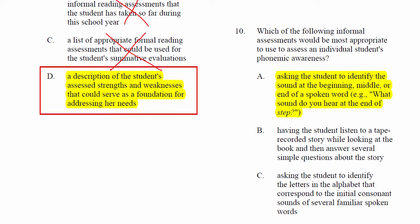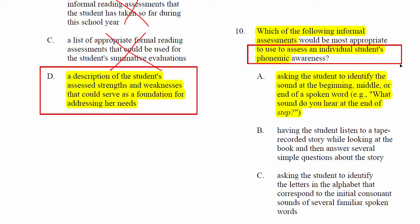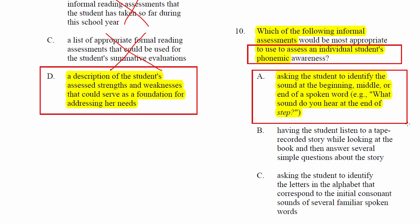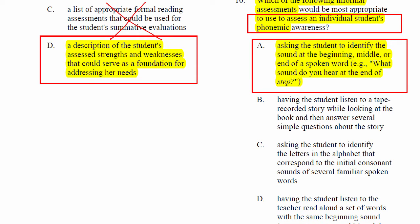Item 10: 'Which of the following informal assessments would be most appropriate to use to assess an individual student's phonemic awareness?' Since you see phonemic awareness, remember you're not dealing with any print — avoid any answer that deals with print. The correct response is A: asking the student to identify the sound at the beginning, middle, or end of a spoken word — for example, 'What sound do you hear at the end of step?' You're trying to find out if the student is getting initial, final, and medial sounds, usually in that order.